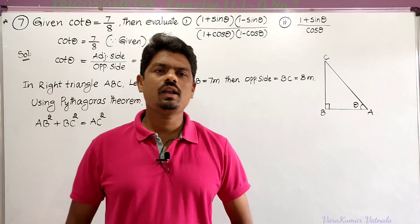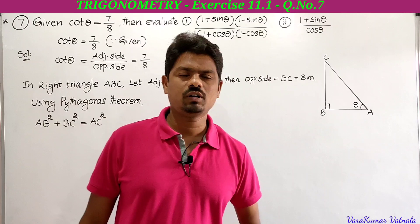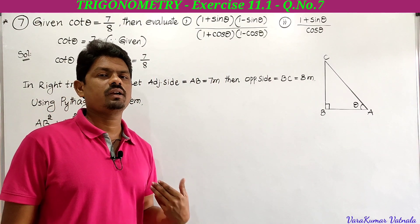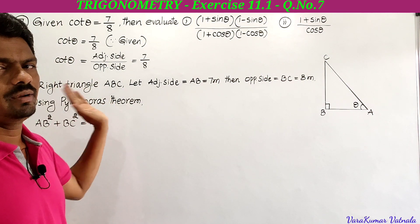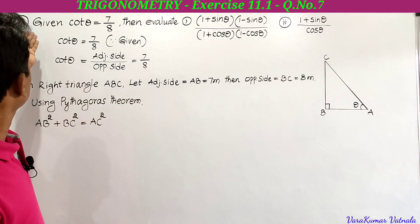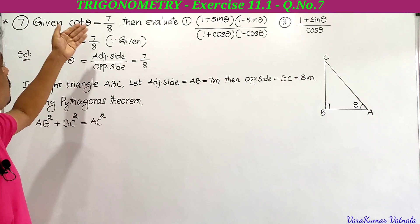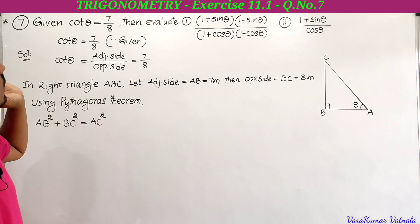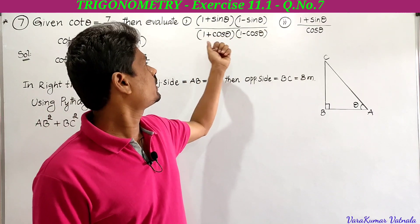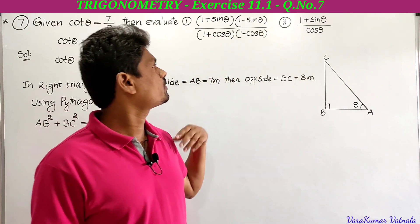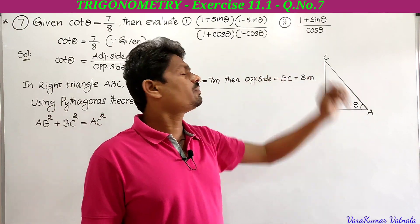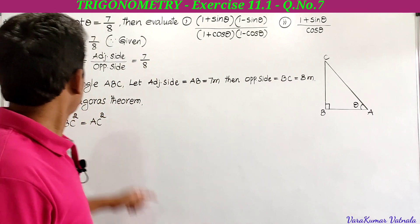Hi, hello, welcome to my channel. My name is Varag Kumar. Today we are going to solve a problem from the 11th chapter, Trigonometry, Exercise 11.1, Problem 7. We are given cot theta equal to 7 by 8, then evaluate: first, (1 + sin theta)(1 - sin theta) divided by (1 + cos theta)(1 - cos theta); and second, (1 + sin theta) by cos theta.